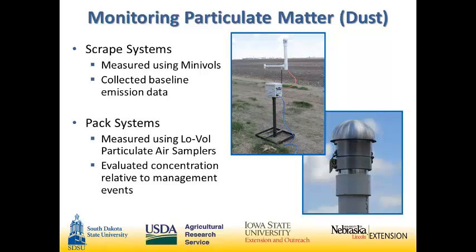Particulate matter is sampled a little bit differently than gases. With gases, we pull the gas through a tube and analyze what's in that air. For dust, our approach was to set out analyzers that measure how much dust accumulates on a filter over time. We looked at a couple of different sizes of dust. TSP is total suspended particulate — all particulate matter suspended in air. We also looked at PM10, particulate matter with diameter less than 10 microns. Just to put that in perspective, a human hair is about 70 microns, so we're talking about particles that are a seventh the size of a human hair.